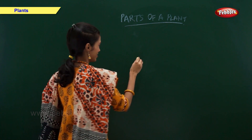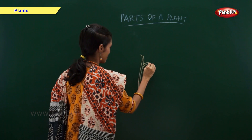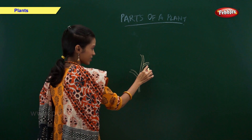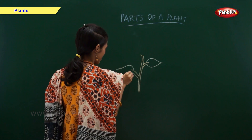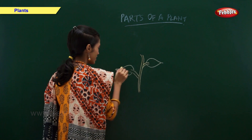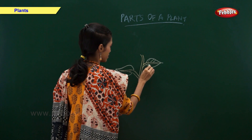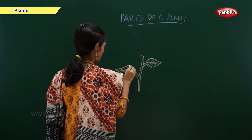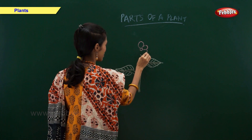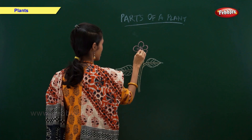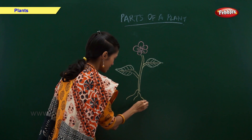Now let us draw a stem. These are branches. These are leaves. This is a flower. These two are leaves. And these are roots.